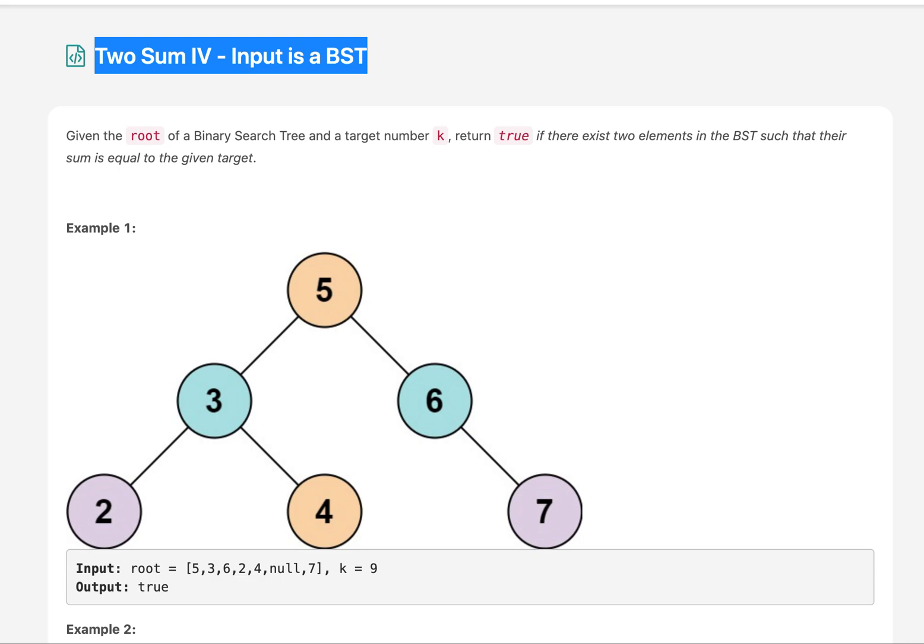In this question, we are given the root of a binary search tree and we need to tell if there exist two elements when added together gives us a target number k. If such two numbers exist in the binary search tree, we return true, otherwise we return false.